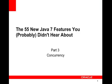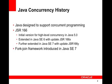Welcome to the third edition of 55 new Java 7 features that you probably didn't hear about. In this edition, we are going to cover primarily the concurrency APIs that came in Java 7.